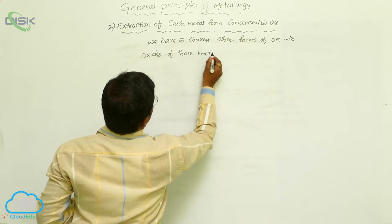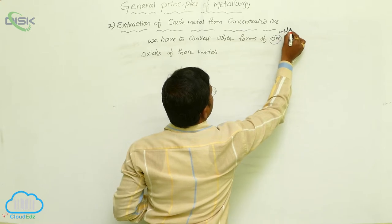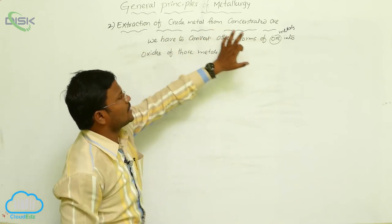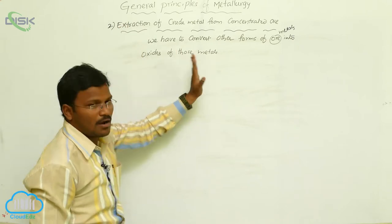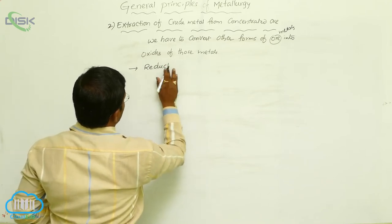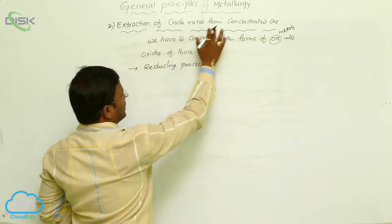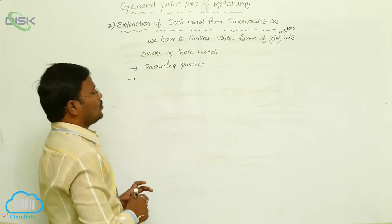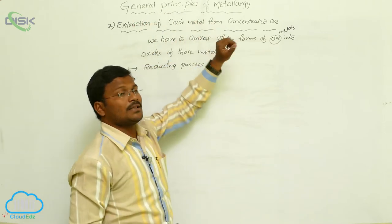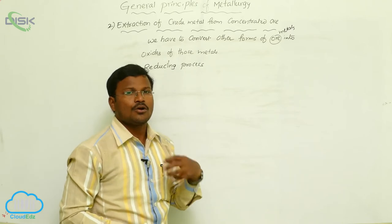We have to convert other forms of ore into metal oxides in the very beginning step for the extraction of crude metals from the concentrated ore. This is because the most widely used step in the extraction process is reduction. Oxides can easily undergo reduction. Hence, we convert other forms of metals into oxide forms so that those oxides can easily undergo reduction to produce crude metal.